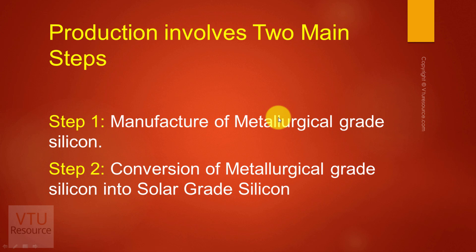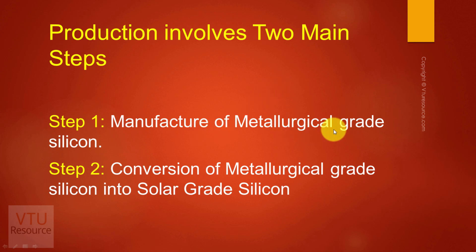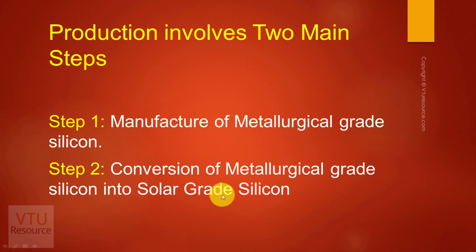The synthesis of solar grade silicon involves two steps. The first step is the manufacture of metallurgical grade silicon, and the second step is the conversion of metallurgical grade silicon into solar grade silicon. Let us discuss this step by step.